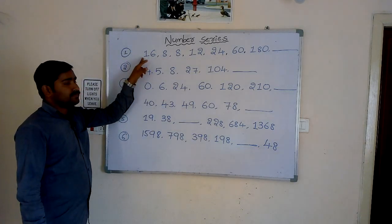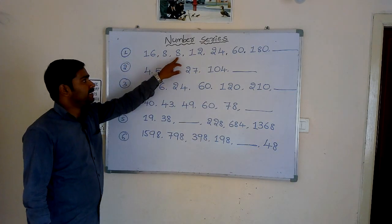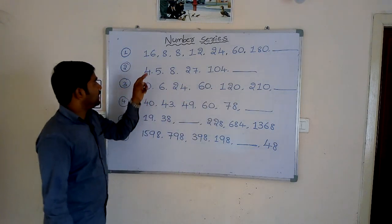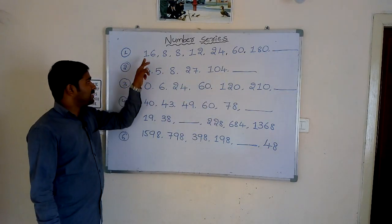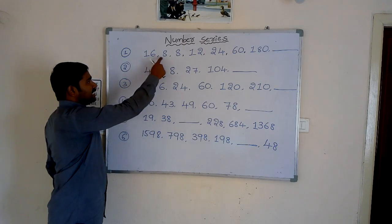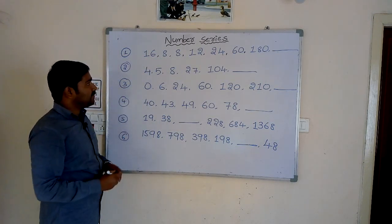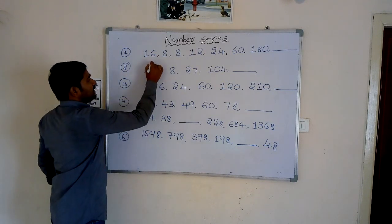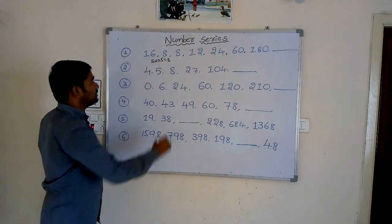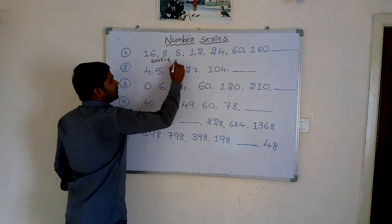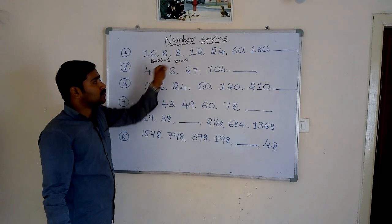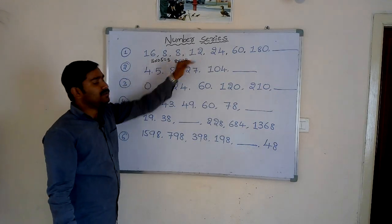First question: 16, 8, 8, 12, 24, 60 — find the next number in this series. Observation: 16 to 8 is a sudden decrease, so there may be a chance of a divisibility rule. For example, 16 × 0.5 = 8, and again 16 × 0.5 = 8. Next, 8 × 1 = 8. So the logic involves multiplying by increasing values. Next number after 8 should be 12.